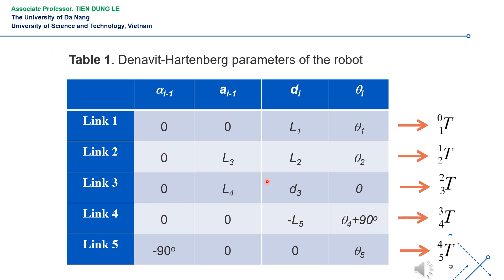The joint variables will change during the robot's movement. The dimensions L1, L2, L3, L4, and L5 are specific parameters and constants. From the rows of this parameter table, we are going to describe the orientation and position between the successive links of the robot.